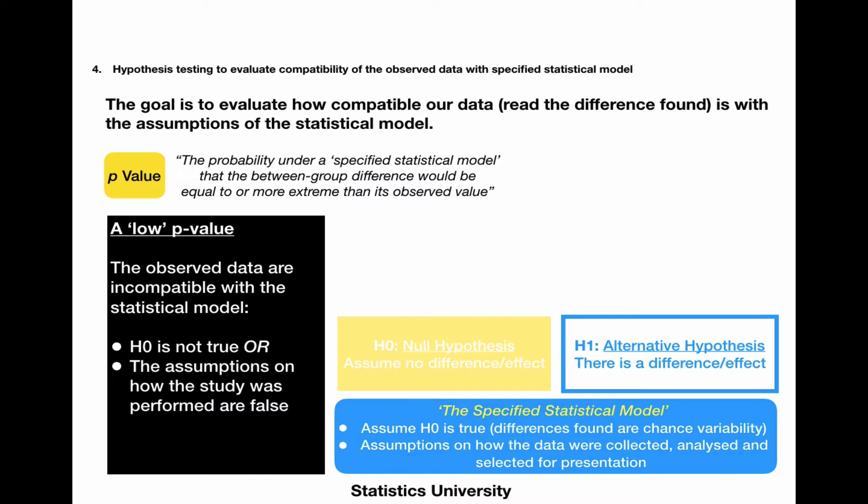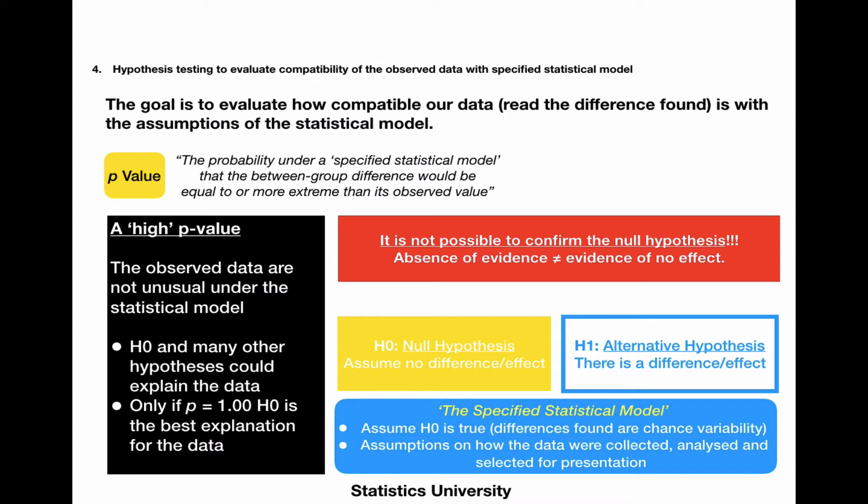And if we find a high p-value, it simply means that the observed data are not unusual under the statistical model. So the null hypothesis and many other hypotheses could explain the data. And note that only if the p is 1.00, which you hardly ever find, is the best explanation for the data.